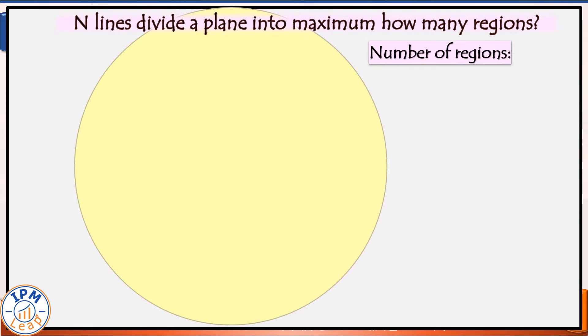Now, before any line is drawn, initially there is one big region. When we draw the first line, it divides this region into two. Therefore, the first line increases one region in the plane.